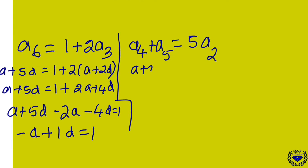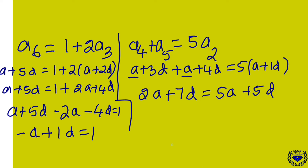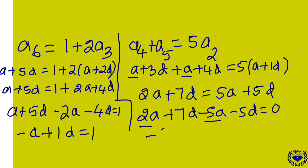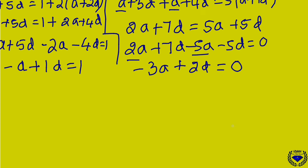For equation 2: (A plus 3D) plus (A plus 4D) = 5(A plus D), giving 2A plus 7D = 5A plus 5D. Rearranging: minus 3A plus 2D = 0. Now we have two equations: minus A plus D = 1 and minus 3A plus 2D = 0.